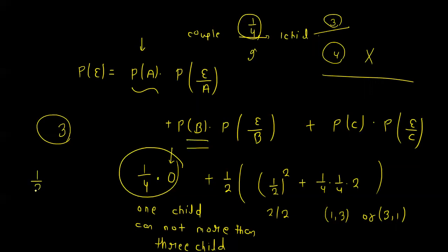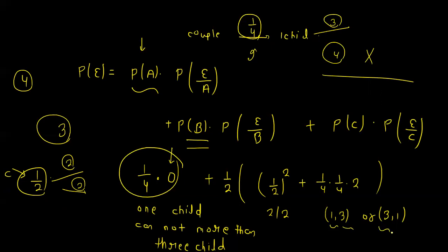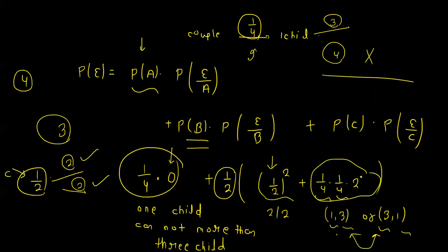In the second case, the couple has 2 children with probability 1/2. For 4 grandchildren from 2 children, each child must produce 2 children — probability 1/2 times 1/2. Or one child has 1 and the other has 3, giving 2 possibilities: (1,3) and (3,1), each with probability 1/4 times 1/4.